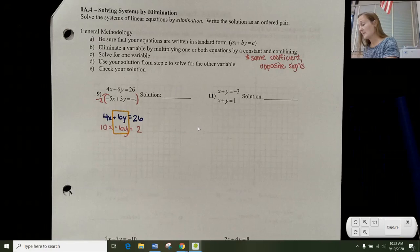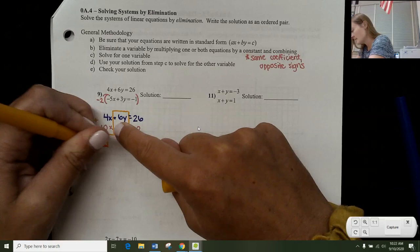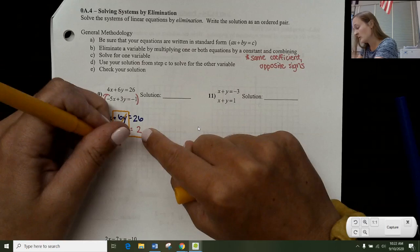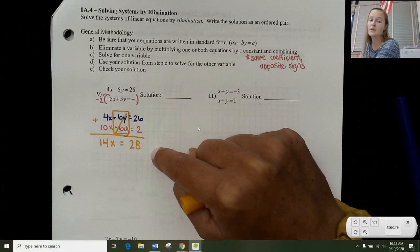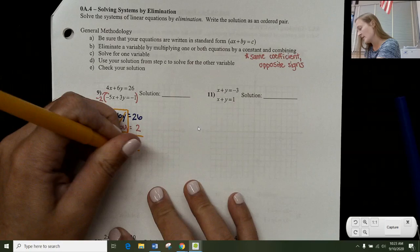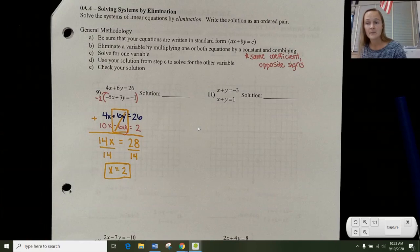So when I add down, 4X plus 10X is 14X. 6Y plus negative 6Y, that goes away, or is 0Y. And 26 plus 2 is 28. So now I have one simple equation with one variable. And at this point, I can solve for X. So this is step C, where it says solve for one variable. So if I divide by 14 on both sides to get rid of that 14 and have the X alone, I get to X equals 2. So there's my first variable.